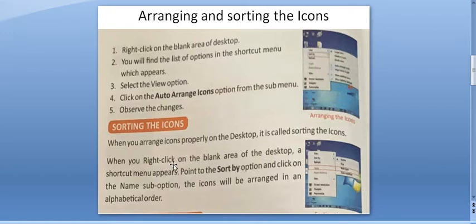Now first is click on the blank area of desktop. You will find the list of options in the shortcut menu which appears. Select the view option. Click on the auto arrange icons option from the sub menu. Observe the changes.